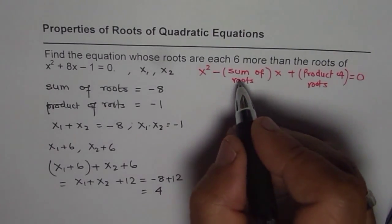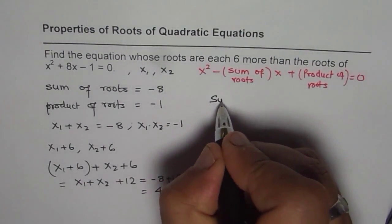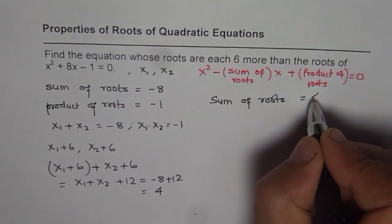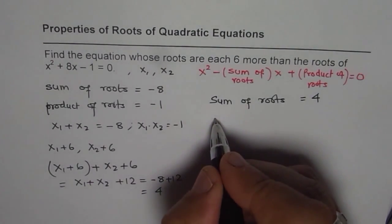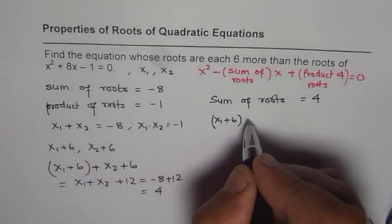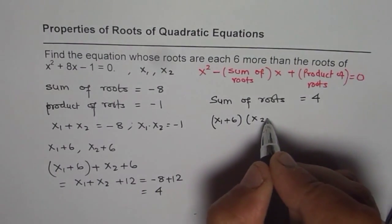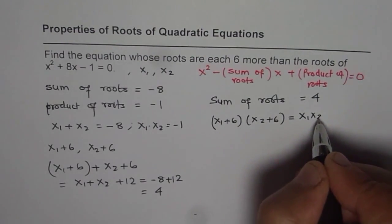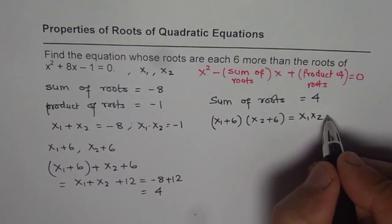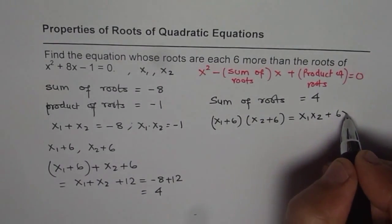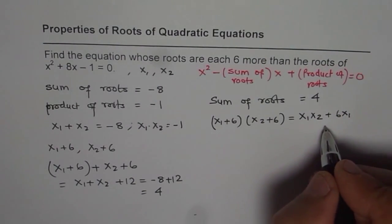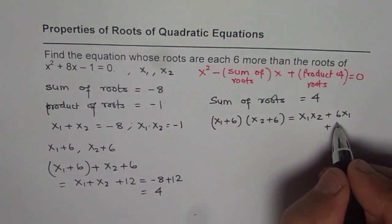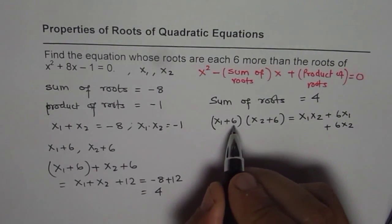So we found that the sum of roots is 4. So we can write down here, sum of roots equals 4. So let us now find product of roots. Product will be (x₁ + 6) × (x₂ + 6). Now if you multiply that, you get x₁x₂ and then you get +6x₁ + 6x₂ + 36.